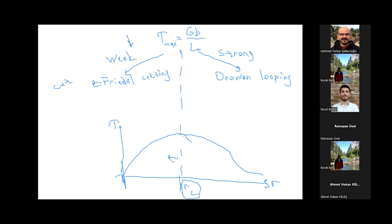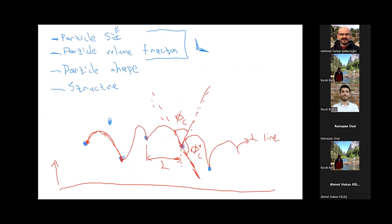That means we have some critical size. That is why we need to care about aging time. We don't want to go to Orowan looping; we don't want to overage particles; we don't want incoherent particles. We want to stay in the Friedel cutting region with coherent particles and minimize the negative effects of precipitation hardening. You want to stay on the left-hand side of this region.